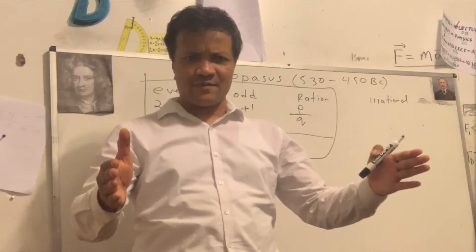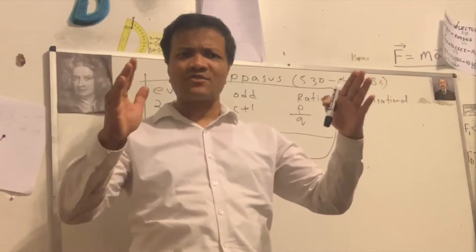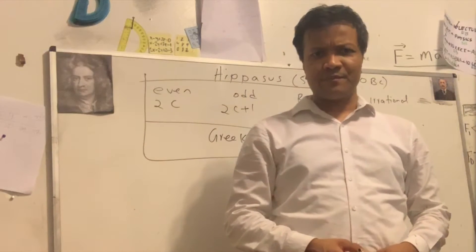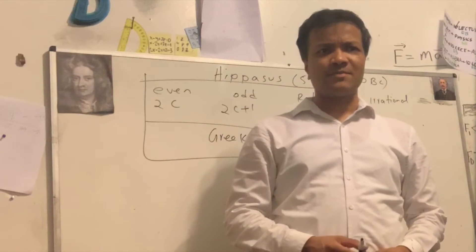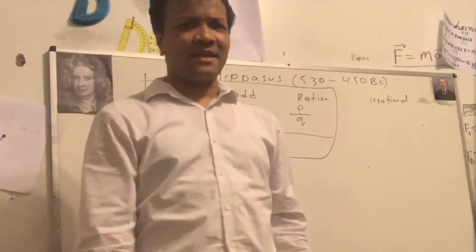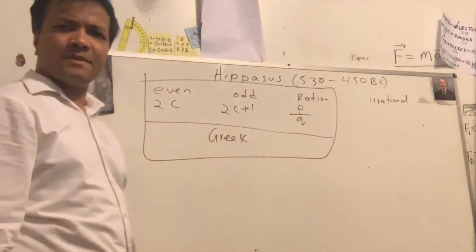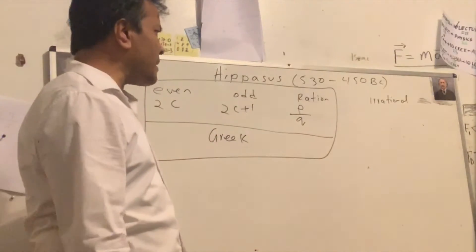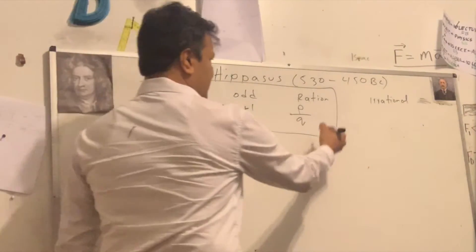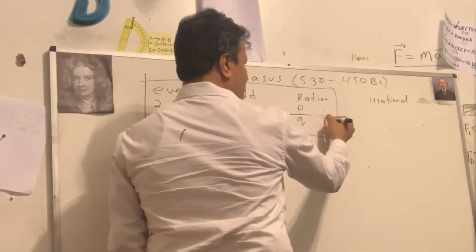Pythagoras was the man who gets credit for A squared plus B squared equals C squared. Now, what is an irrational number? Can someone give me an example of a rational number first? Three over five, one over two — these are rational numbers.